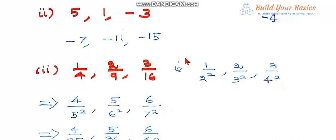So look at the numerators: 1, 2, 3. First term 1, second term 2, third term 3, so for the next term it will be 4, for the next term 5, for the next term 6.